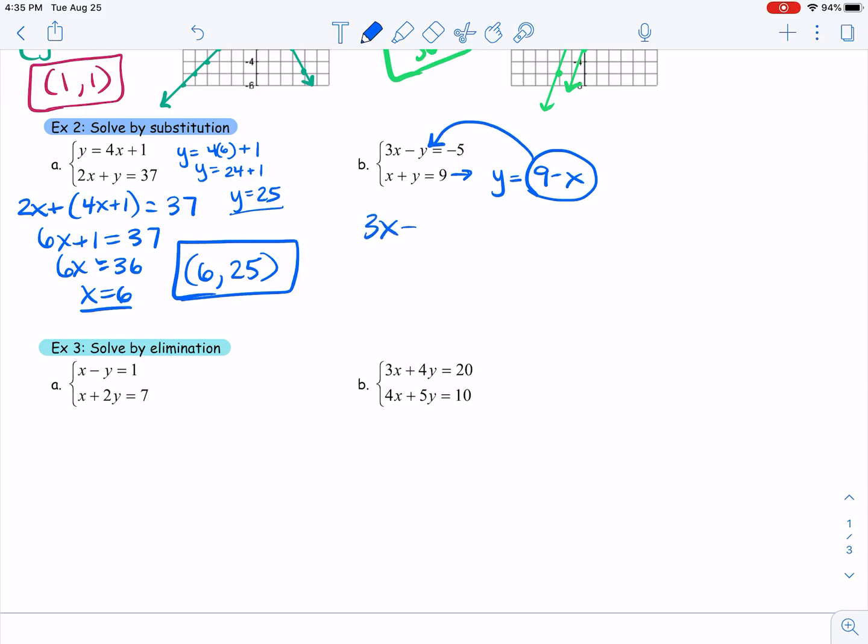So I'm going to take this 9 minus x and I'm going to plug it into this y right here. So now I have 3x minus, open up that parenthesis, 9 minus x equals negative 5. Super important that you, when you're using substitution, that you put what you're substituting in parentheses because of cases like this. It is so important that we distribute that negative. And this becomes 3x minus 9 plus x equals negative 5. So many of you are going to forget to distribute that negative and it's going to mess everything up for the rest of the problem. So be very careful about that.